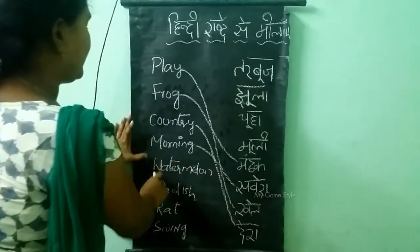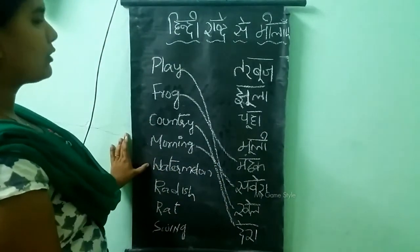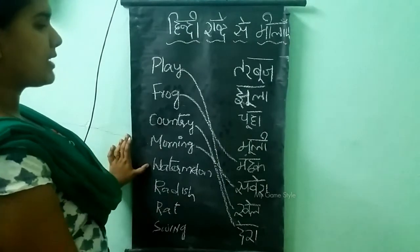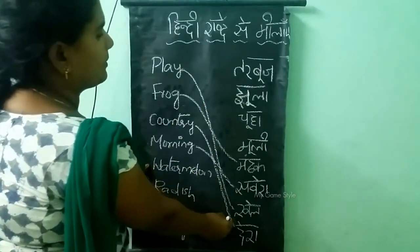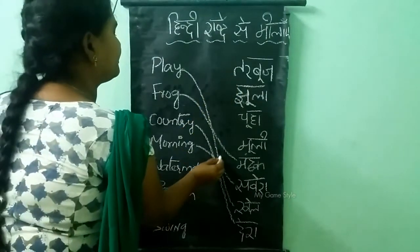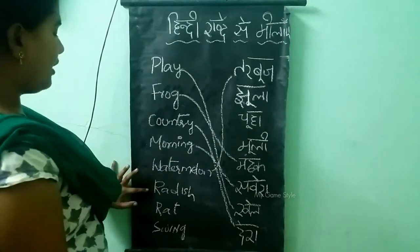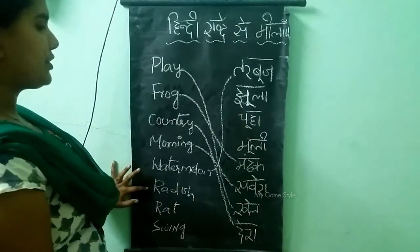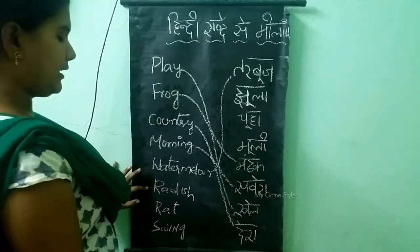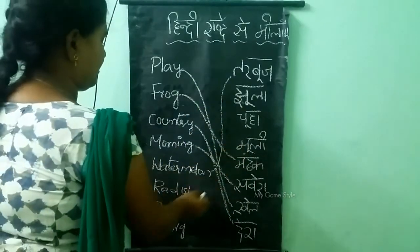Next word is Watermelon. Watermelon ko kahte hai Tarbuja. Where is Tarbuja? Here it is. Next word is Radish. Radish ko kahte hai Muli. Where is Muli? Here it is.